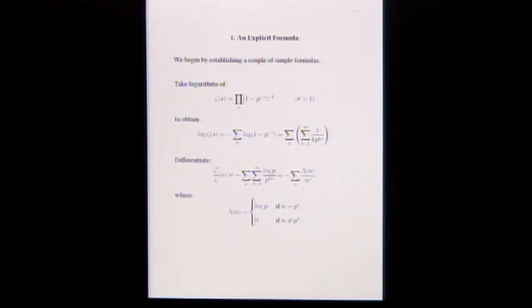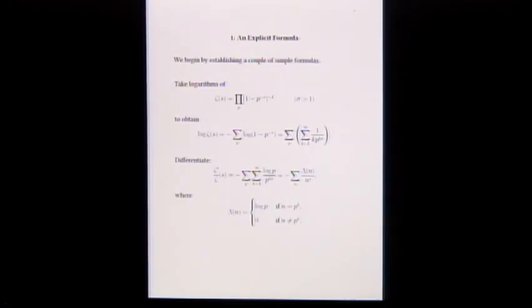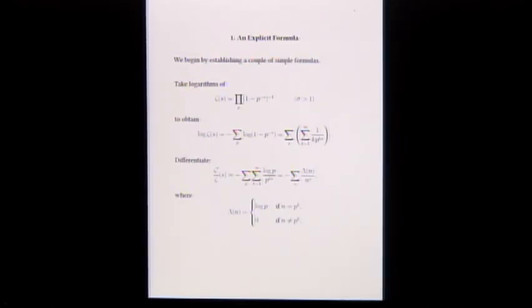Let's start. I'm going to prove an explicit formula. There are lots of explicit formulas; the one that appears in Riemann's paper will follow from the one I'm going to show you now. For sigma bigger than 1, zeta of s is the Euler product. Take logarithms, write the log as its Maclaurin series, and you have this.